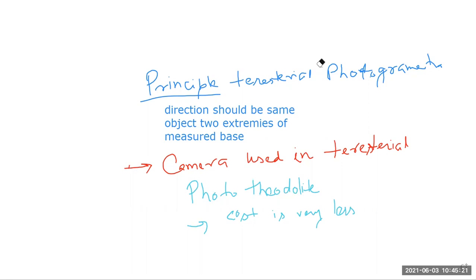The principle of terrestrial photography is: if the direction of the same object photographed from two extremities of a measured base are known, then the position can be located by intersection of two rays to the same object. This base is known and measurable.